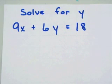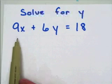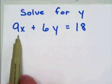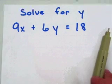When we want to get y by itself, what we want to do is have all of the terms that have y in them on one side of the equal sign, and get all of the terms that don't have y in them to the other side of the equal sign. That's step one. So if we notice, this 9x doesn't have a y in it, so I want to move that 9x to the other side of the equal sign.